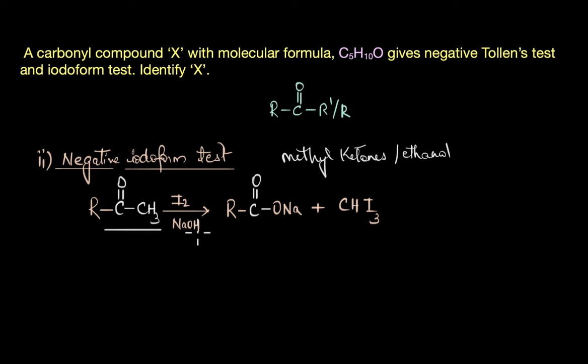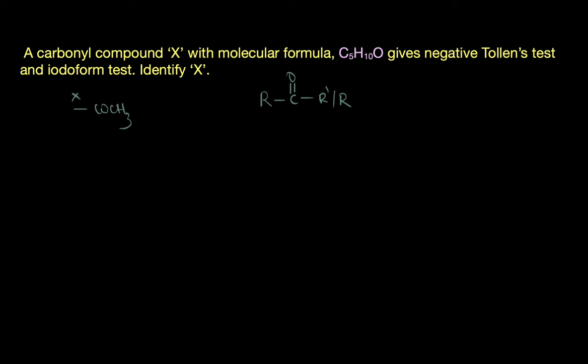That is, when a compound with a methyl ketone or COCH3 group, or ethanol, is treated with iodine in the presence of a strong base, a yellow precipitate of iodoform is obtained. And this formation of the yellow precipitate indicates a positive result. Now in our case, since X gives a negative test, we can confirm that the carbonyl compound is not a methyl ketone.